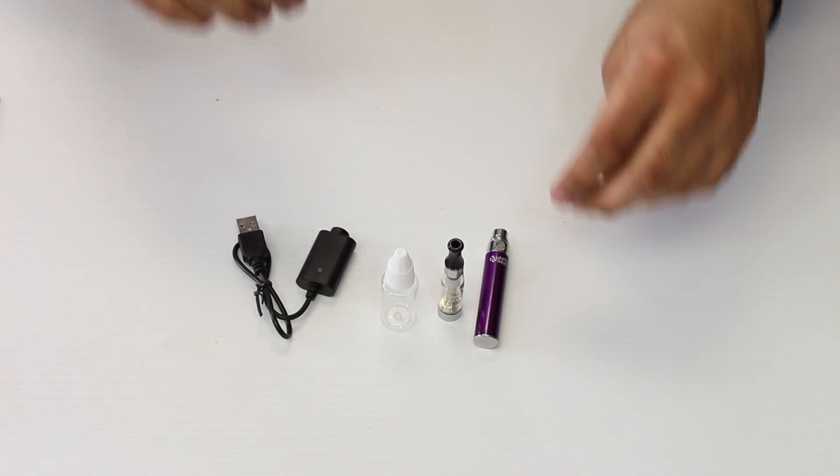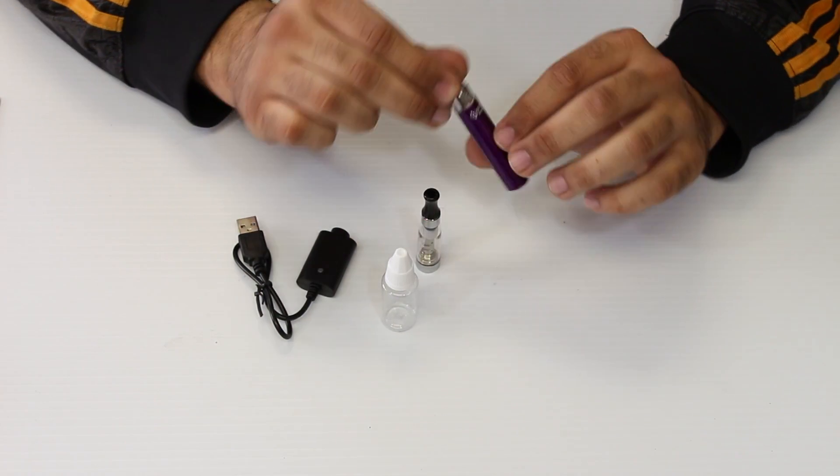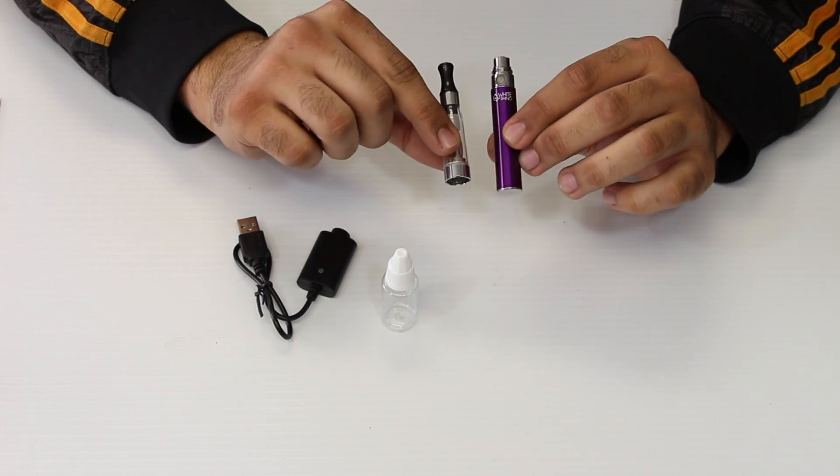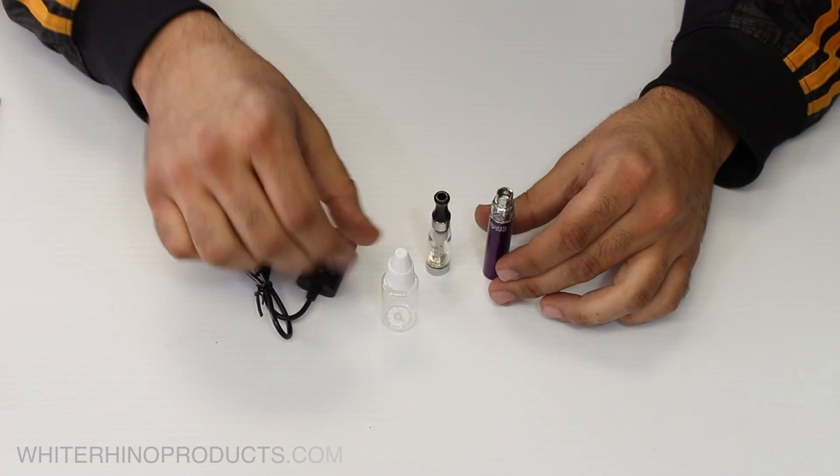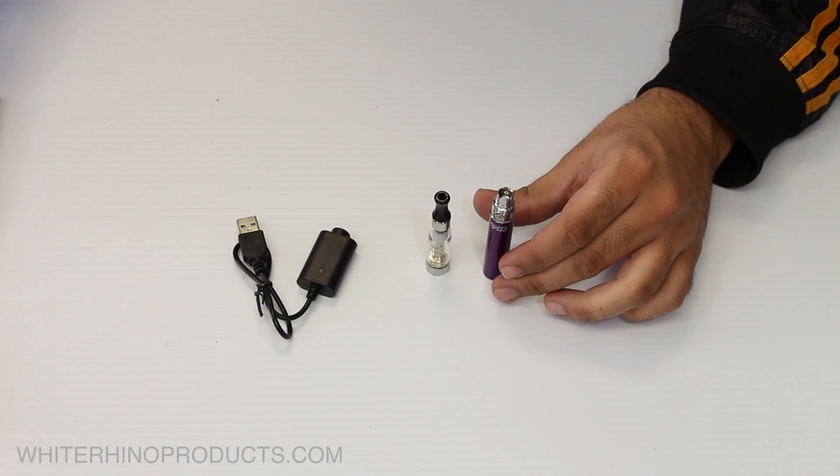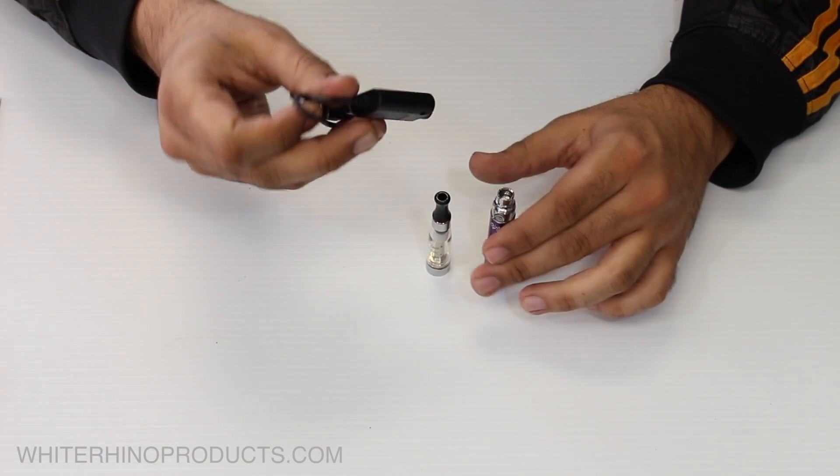Alright, let's go ahead and put the product together. First off, again, this is the battery, this is your tank. This is just a mixing bottle - it's only if you want to mix flavors - and your USB charger.